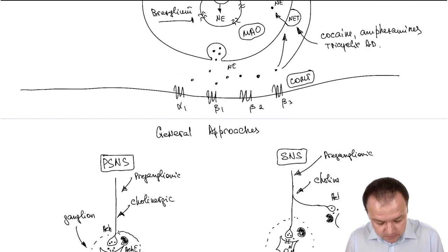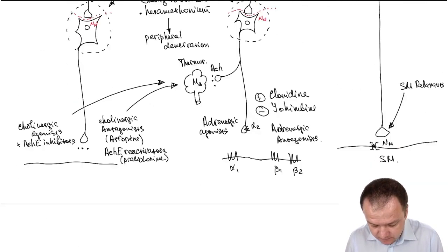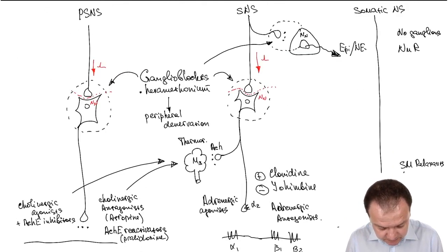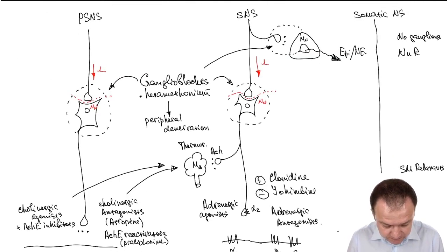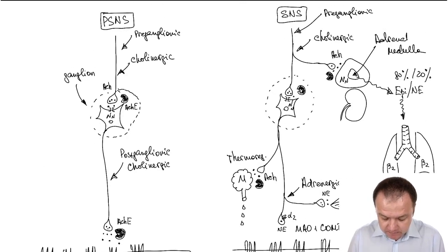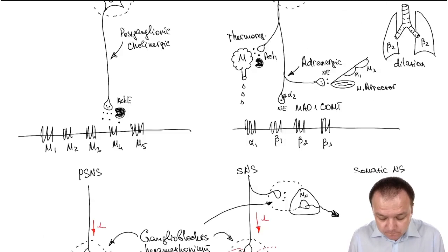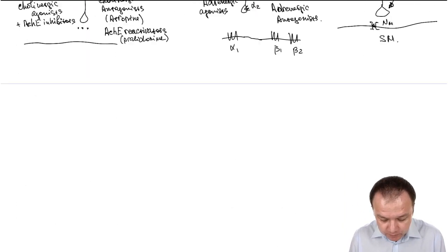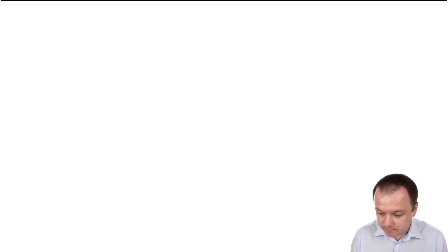Now let's see the sites of action based on this diagram, this illustration of transmission in ganglions in parasympathetic nervous system and sympathetic nervous system. What can you say about where botulinum toxin will act?